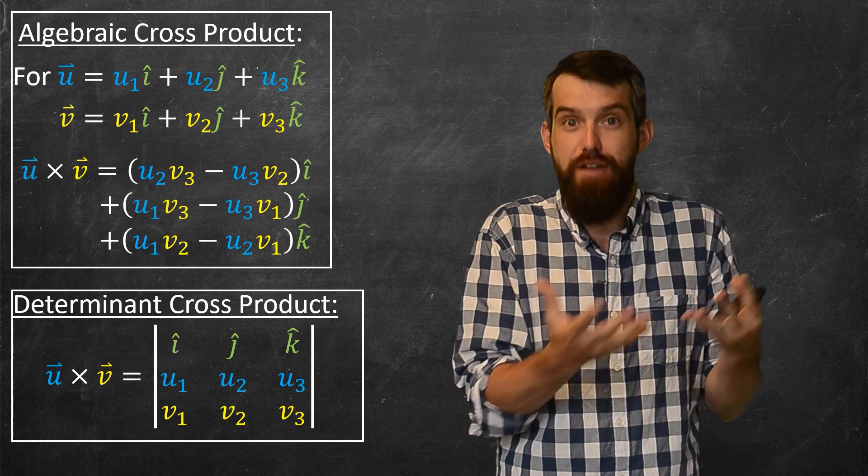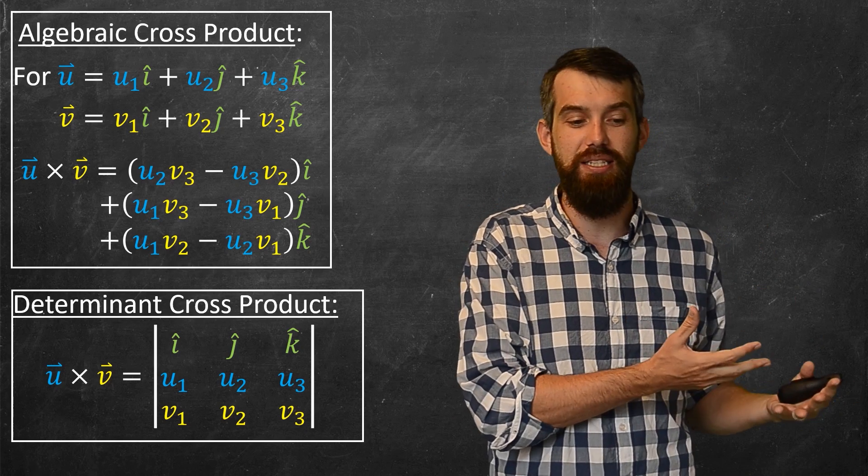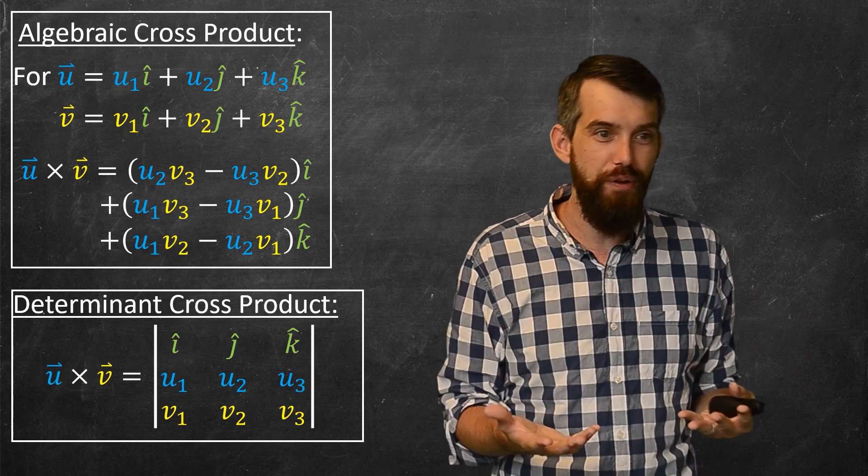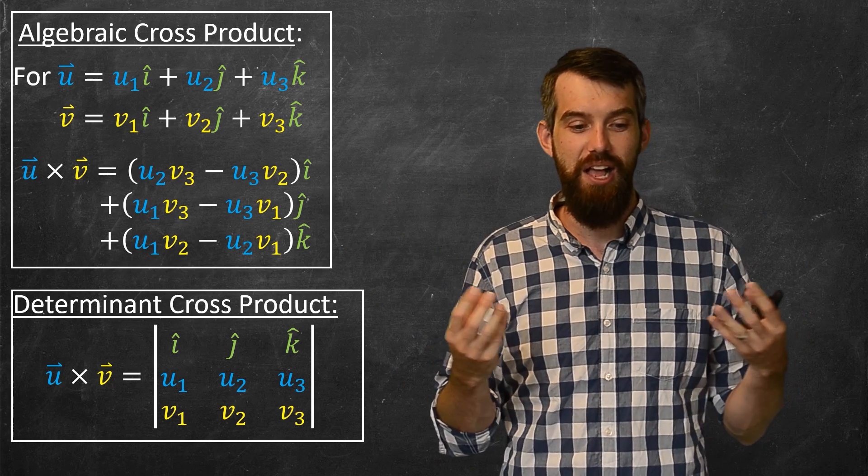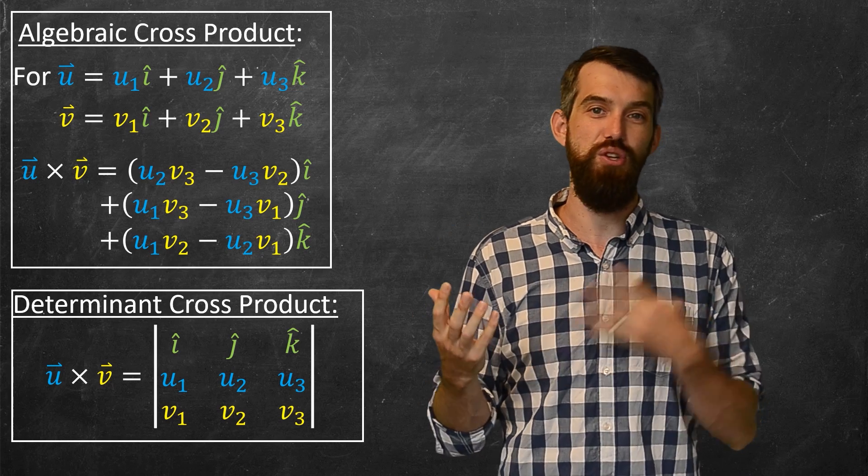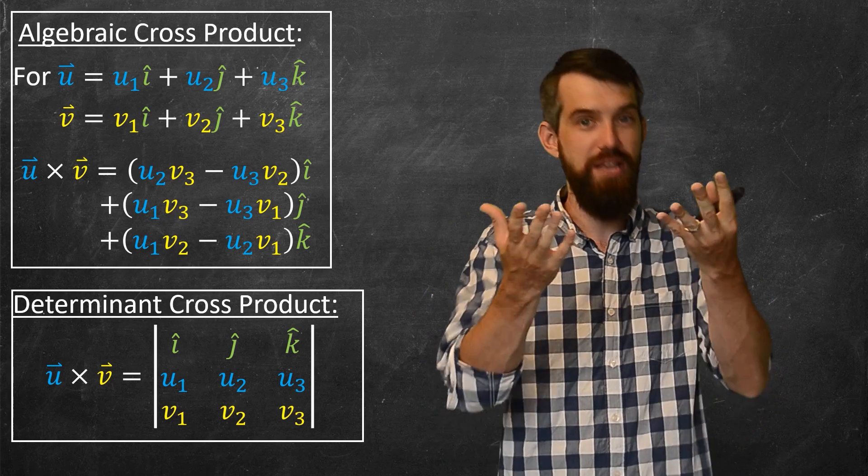The determinant form of the cross product is that the cross product of u and v is in the top row of your matrix you write i, j, k, then u1, u2, u3 in the next row, and v1, v2, v3 in the final row, and then you take the determinant of that.